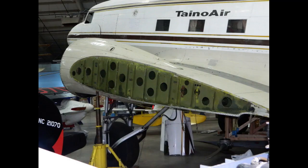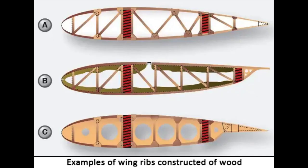Wood ribs are usually manufactured from spruce. The three most common types are the plywood web, the lightened plywood web, and the truss types. Of these three, the truss type is the most efficient because it is strong and lightweight, though it is also the most complex to construct. Wood ribs have a rib cap or cap strip fastened around the entire perimeter of the rib, usually made of the same material as the rib itself. The rib cap stiffens and strengthens the rib and provides an attaching surface for the wing covering.